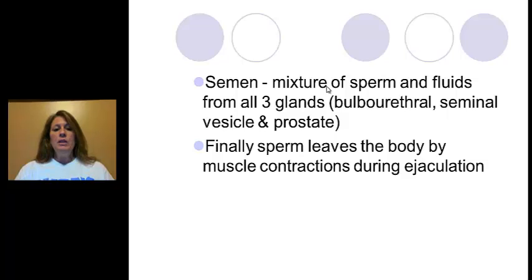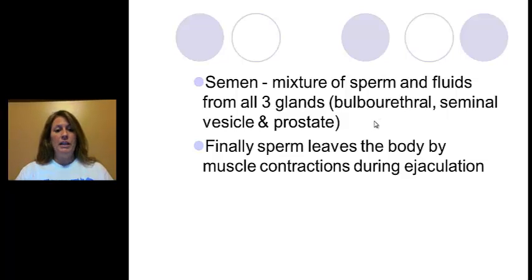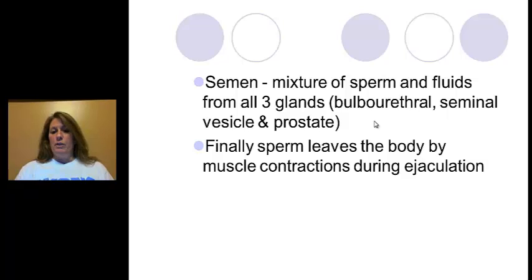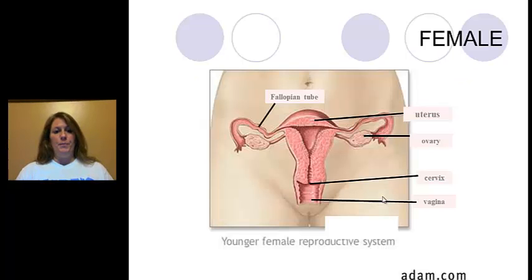Semen is a mixture of the sperm with fluids from three glands: the bulbourethral gland, seminal vesicle, and the prostate. Cowper's gland fluid is released prior to the semen — it cleans the area and prepares for ejaculation. Finally, muscle contractions are what cause ejaculation.